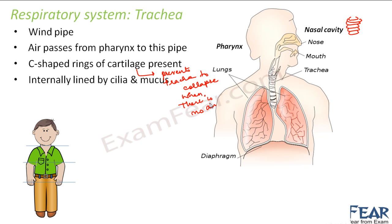The trachea is also internally lined with cilia and mucus. Most organs of the respiratory system are lined with cilia and mucus, and their purpose is to block dust particles, microorganisms, germs, and any other undesired particles. So filtration of air is happening at all stages — in the nostrils with fine hairs, and in the nasal cavity and trachea with cilia and mucus.